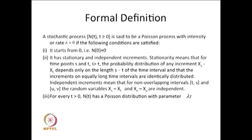The third condition: for every t, N(t) has a Poisson distribution with parameter λt. So the Poisson logic enters in the third condition. The first condition is starting at 0, the second is that increments are stationary and independent, and the third is that for fixed t, N(t) is a Poisson distributed random variable with parameter λt. Therefore, this stochastic process is called a Poisson process.